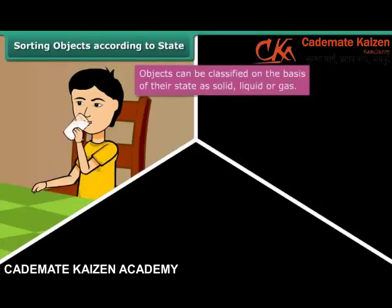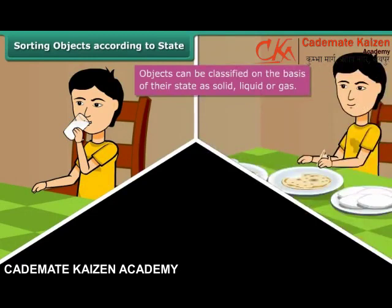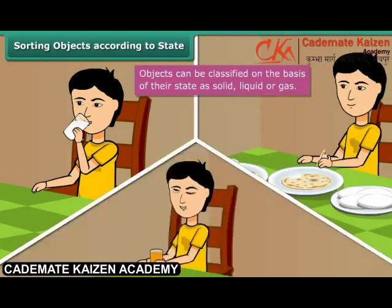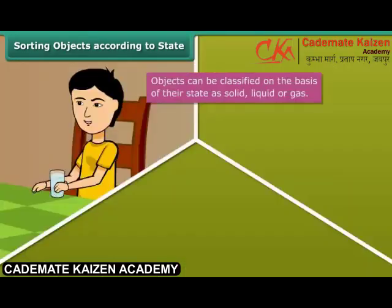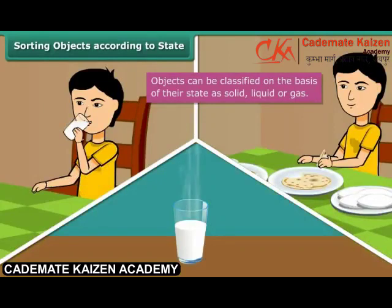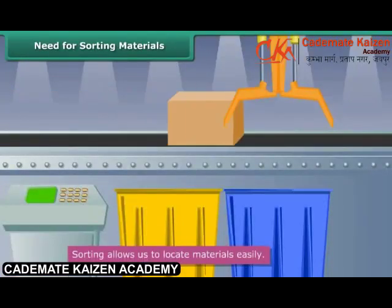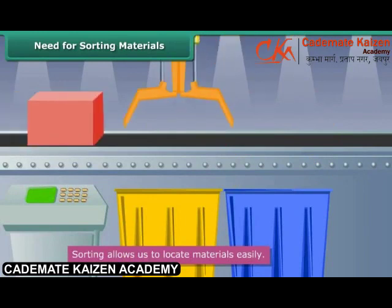The water you drink to quench your thirst is liquid, whereas the food you eat is solid. The chilled juice you relish in summers is liquid, whereas the glass container you have it from is solid. The steaming hot milk you enjoy in winters is liquid, whereas the steam coming out of the milk is a gas. Thus, all the objects we see around us can be classified into one of the three categories: solid, liquid, and gas.